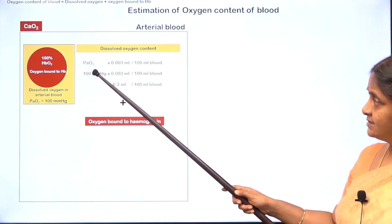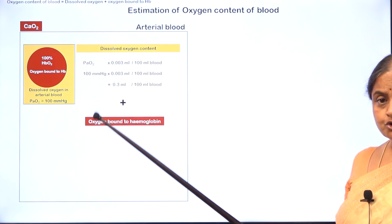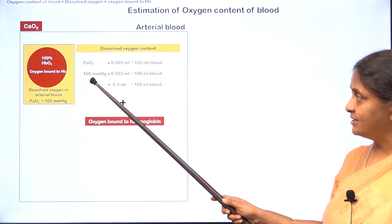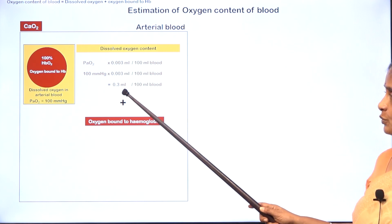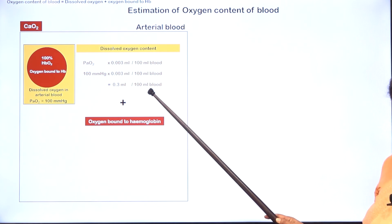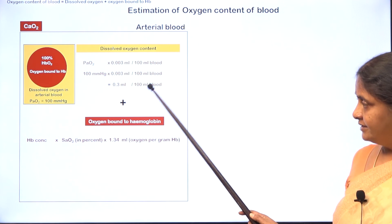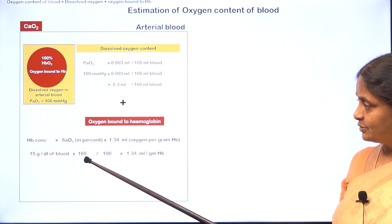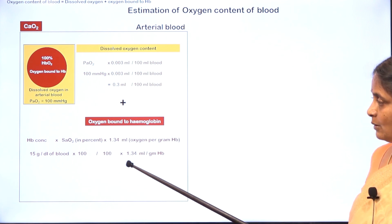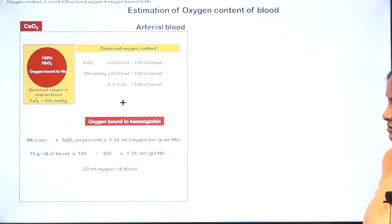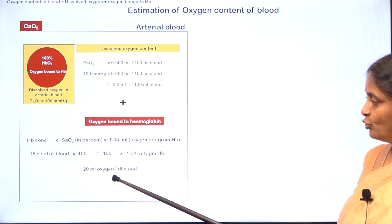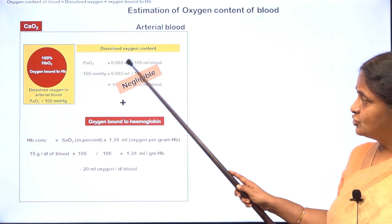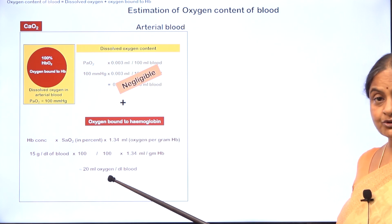The oxygen content of 100 ml of blood is calculated by summing both components. For dissolved oxygen: partial pressure × 0.003. If arterial PO₂ is 100 mmHg, that gives 0.3 ml per 100 ml blood. For oxygen bound to hemoglobin: if hemoglobin is 15 g/dL and 100% saturated, that gives 15 × 1.34 = 20 ml per 100 ml blood. The dissolved oxygen content is negligible compared to the amount of oxygen carried in hemoglobin.